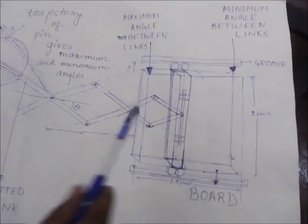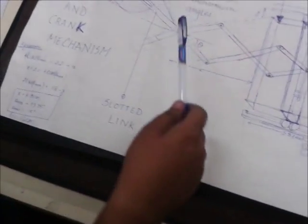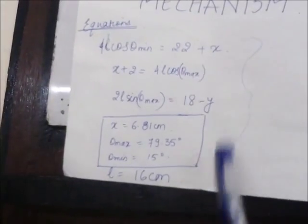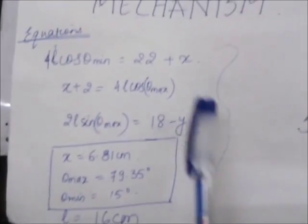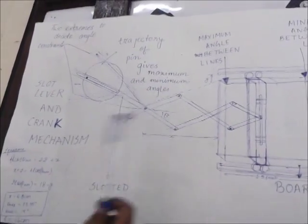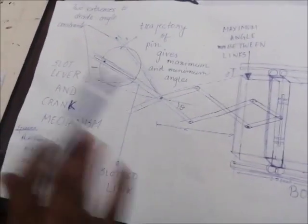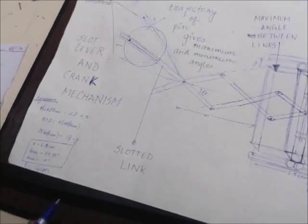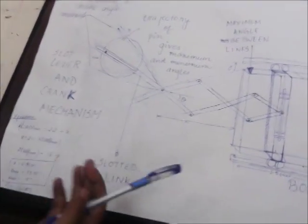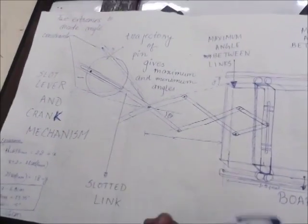Taking these angle constraints into consideration, we assigned the other dimensions and we came up with these mathematical equations, solving which we got the value of the various lengths. To realize this project, we started our work with the carpenter.